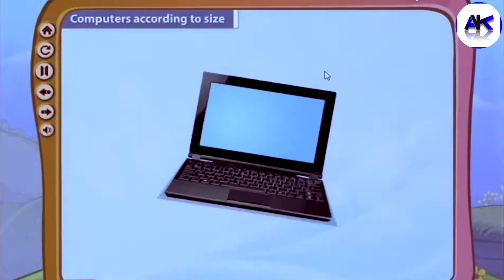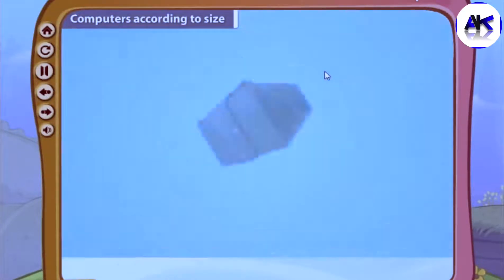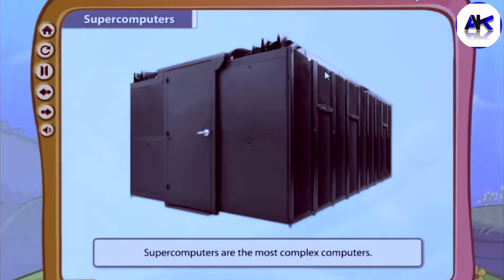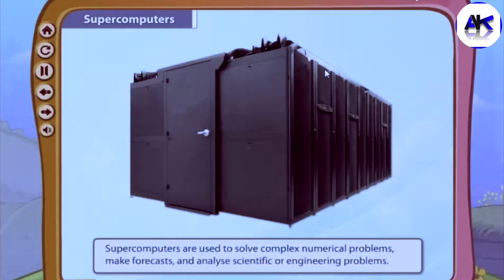Computers are made in different sizes so that different people can use them for different purposes. Supercomputers are the most complex computers. They are used by people who need to process complex and large amounts of data, solve complex numerical problems, make forecasts, and analyze scientific or engineering problems.